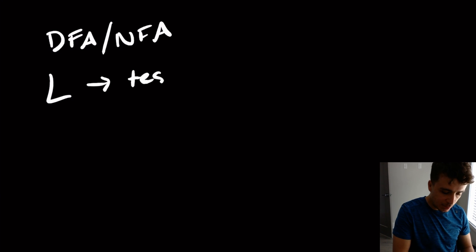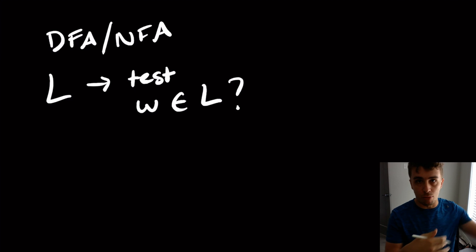So what we've been talking about so far are these DFA, NFA things. And what they allow us to do is to recognize whether a string is in a given language. So if we have a language L, we can test if a given string W is in L or not. And what we do is we just run it through the machine. And if you land in an accept state, then you accept the string.